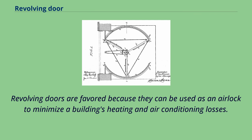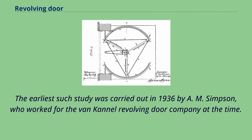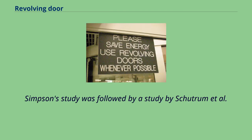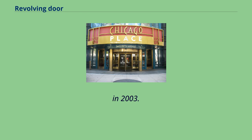Revolving doors are favored because they can be used as an airlock to minimize a building's heating and air conditioning losses. Research into the air and energy exchanges associated with revolving door usage has been carried out on a few occasions. The earliest such study was carried out in 1936 by A. M. Simpson, who worked for the Van Kennel Revolving Door Company at the time. Simpson's study was followed by a study by Sutram et al. in 1961, and more recently a study by Van Kennel et al. in 2003.